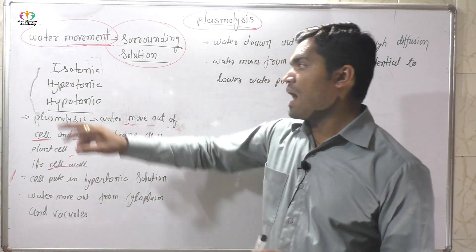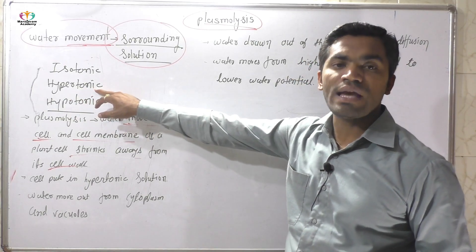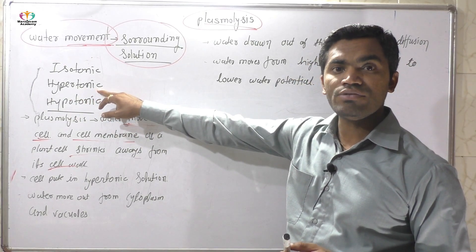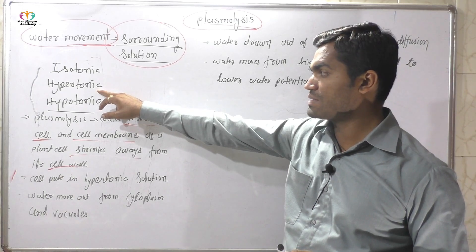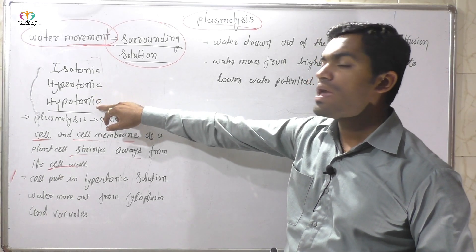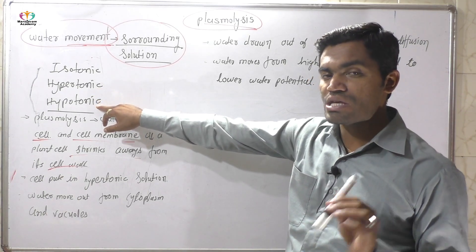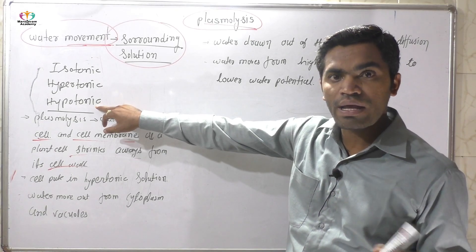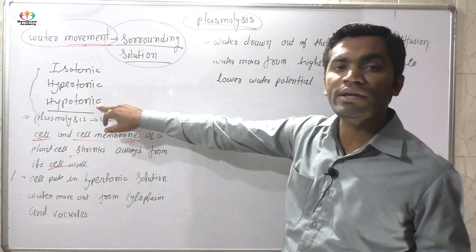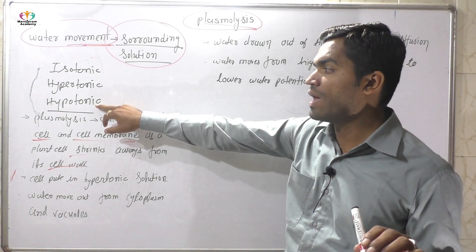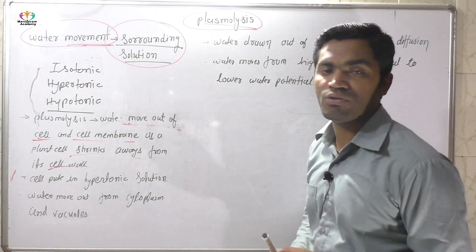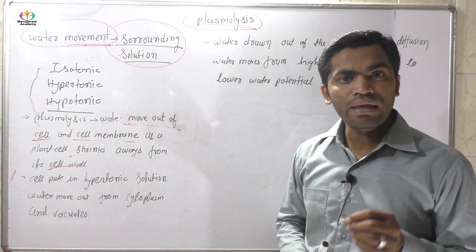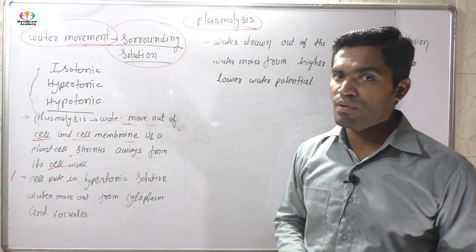When the concentration of the solution is higher than the cytoplasm concentration, it is called a hypertonic solution. When the concentration is lower than the cytoplasm, it is called a hypotonic solution.